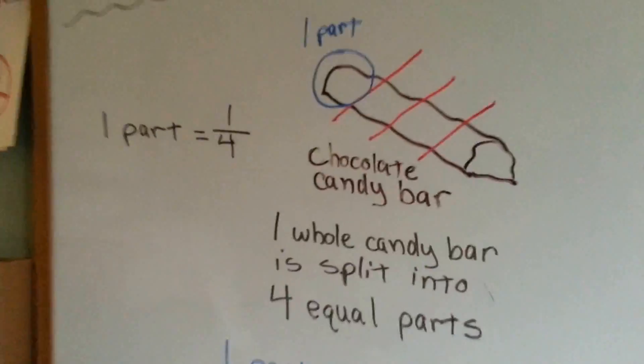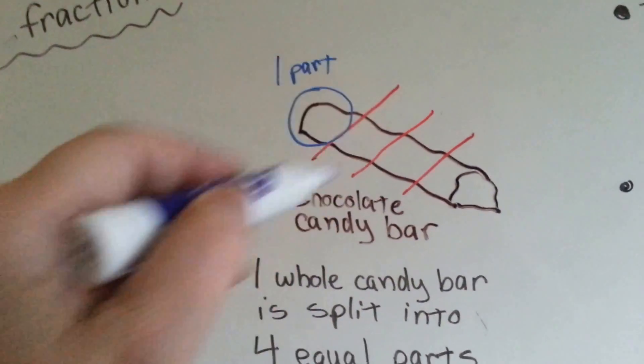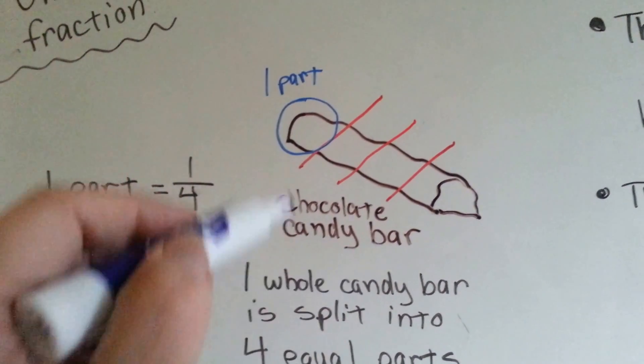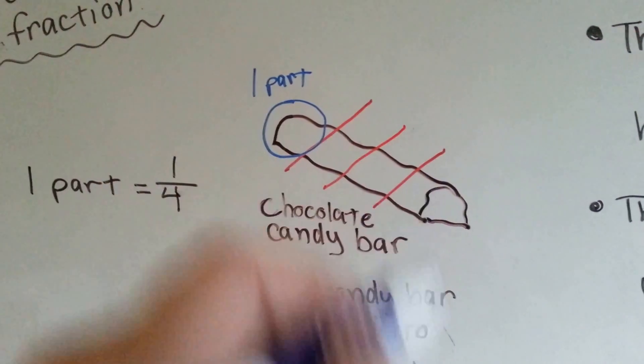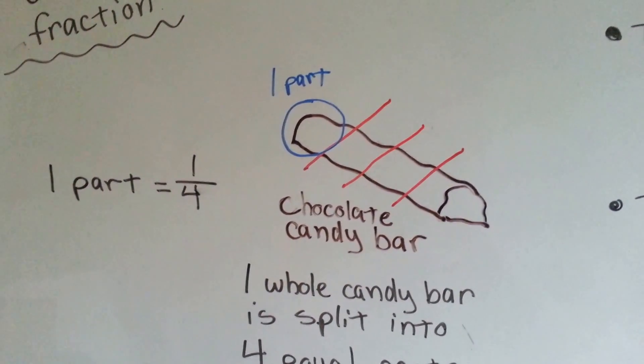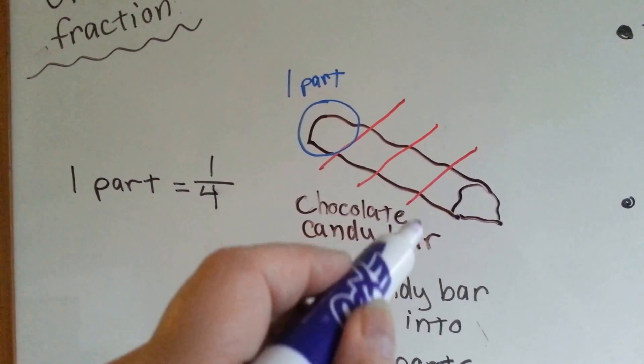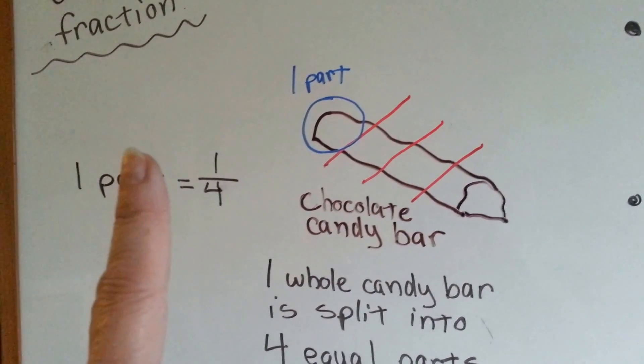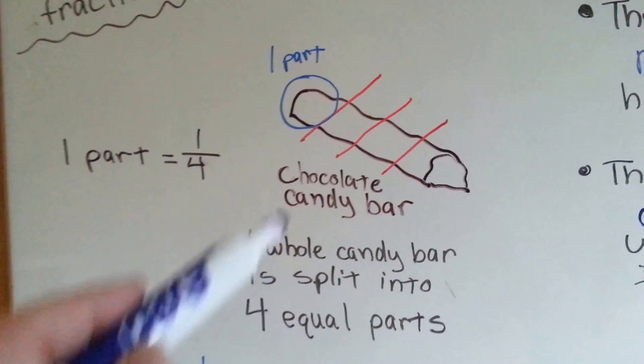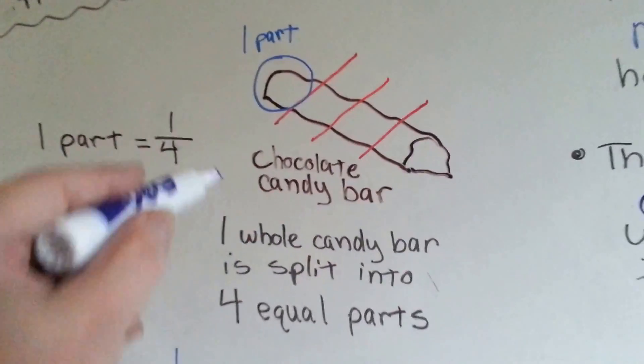Let's look at this candy bar. I took a chocolate candy bar and I cut it three times, which made one, two, three, four equal pieces. Did you know that? To get four pieces, you cut it three times. To get two pieces, you cut it once. Isn't that cool? So I cut it three times and got four equal pieces.